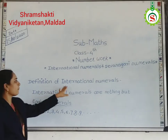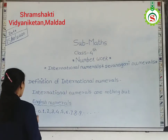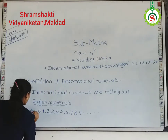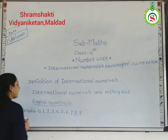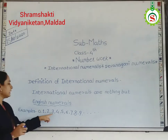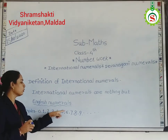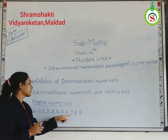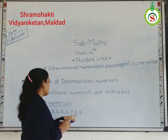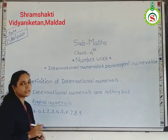Examples of international numerals are 0, 1, 2, 3, 4, 5, 6, 7, 8, 9. Do you understand?